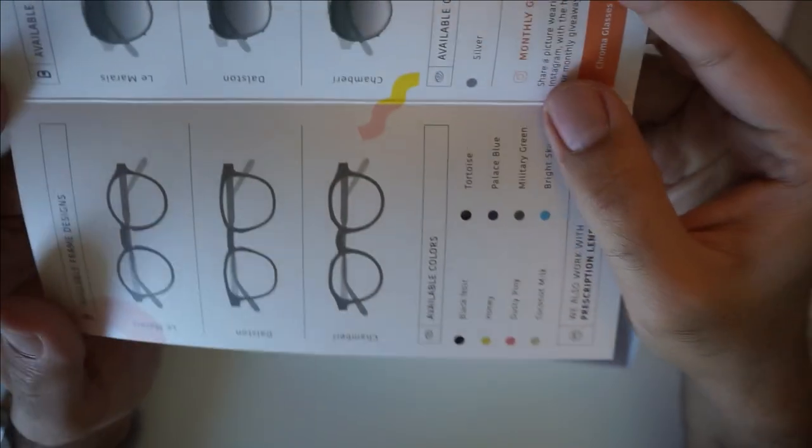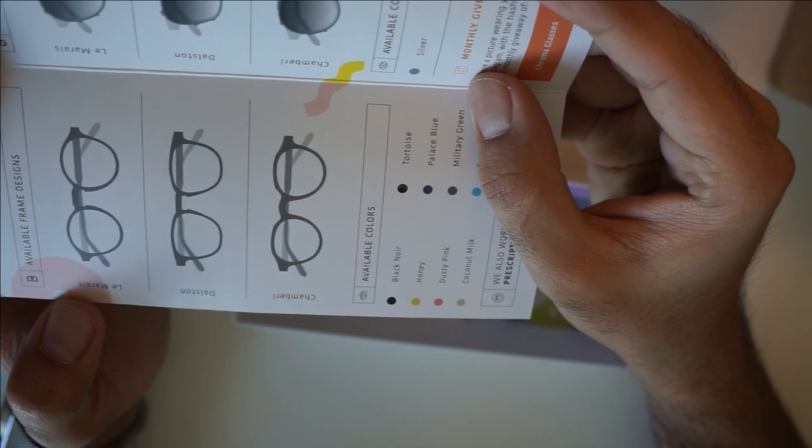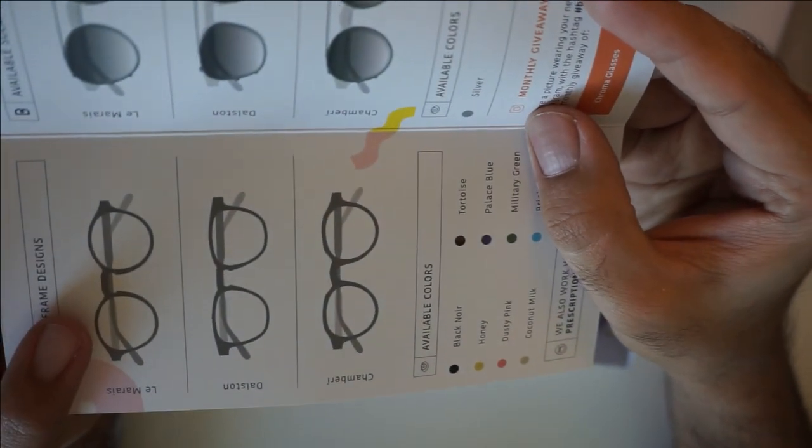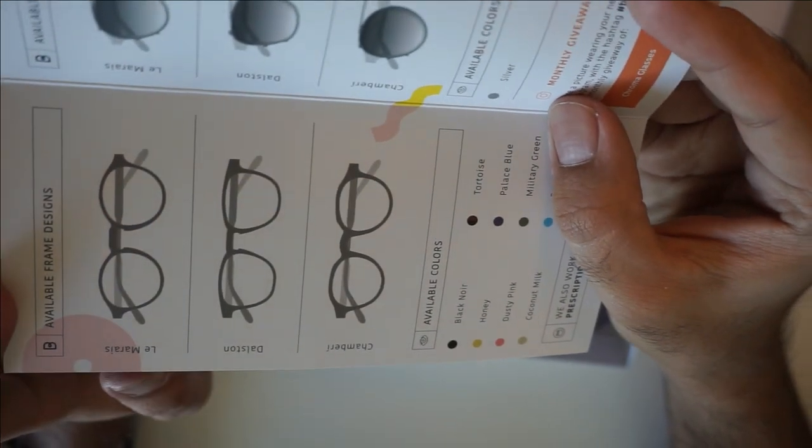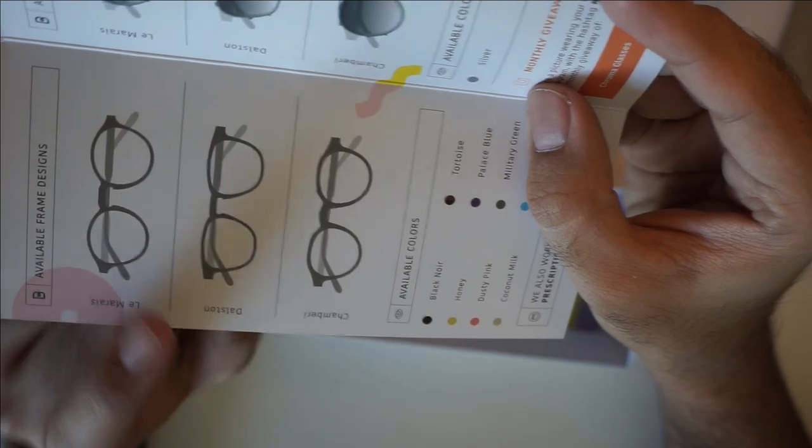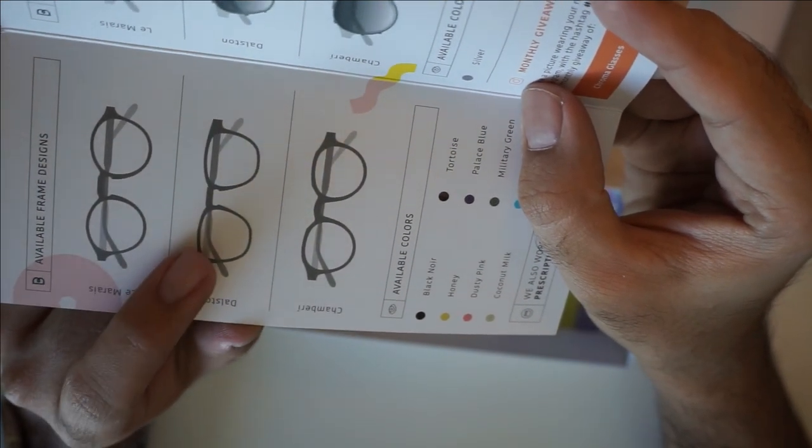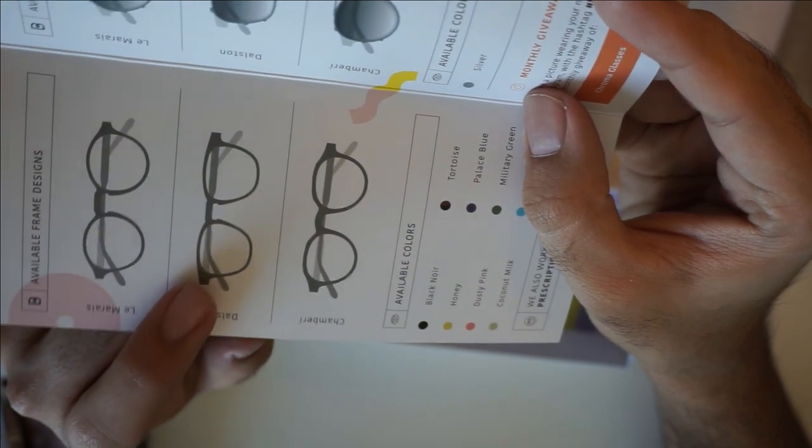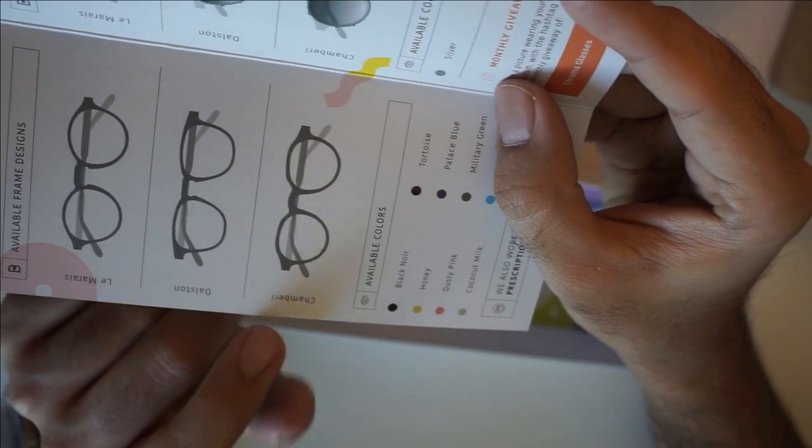Apart from that we have this really nice card which also has mentioned the other type of glasses that are there. We have Le Marais, this is the one that I have ordered and I think that's because of its round shape so I thought that this might look really good on me. In the previous year I have had a glass similar to this one which is Dalston but this is the one I avoided getting this time. I don't personally like the shape of this one so I didn't order this.